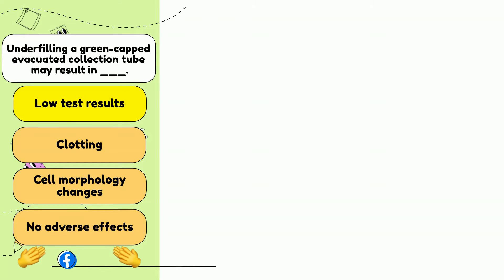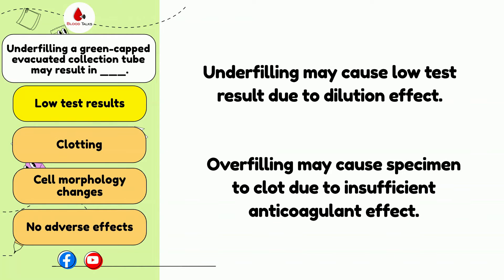The answer is A. The green cap tube may contain either lithium heparin or sodium heparin, and is usually used for chemistry tests on plasma. Underfilling the green top tube may result in low test values because the blood is diluted by an excess amount of heparin. The minimum acceptable drawn volume for the green top tube is 50%. Overfilling, on the other hand, may result in insufficient heparin to prevent blood clotting, causing the specimen to clot. If this occurs, the blood sample may need to be discarded and a new specimen obtained.